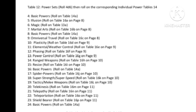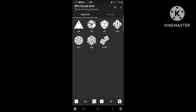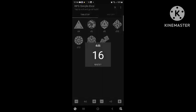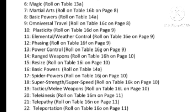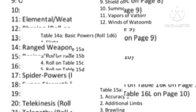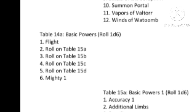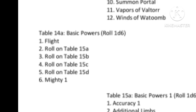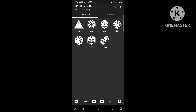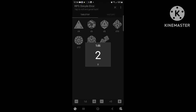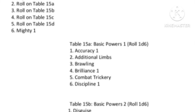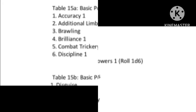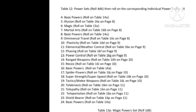Here are the power sets — you get up to 4 powers at rank 1. The first roll is a 16, which sends us to basic powers. Our next table is 14A for the basic powers. We get a 2, then another 2. Table 14A, a 2 means rolling table 15A, and on 15A, another 2 gives us additional limbs. So the dead elemental gets an extra arm.